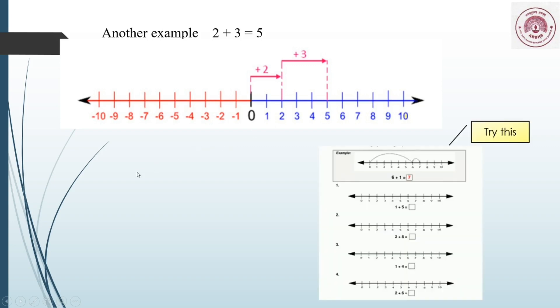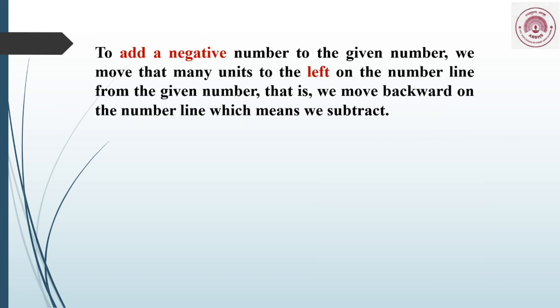Now to add a negative number to a given number, we move that many units to the left on the number line from the given number. That is, we move backward on the number line, which means we subtract.